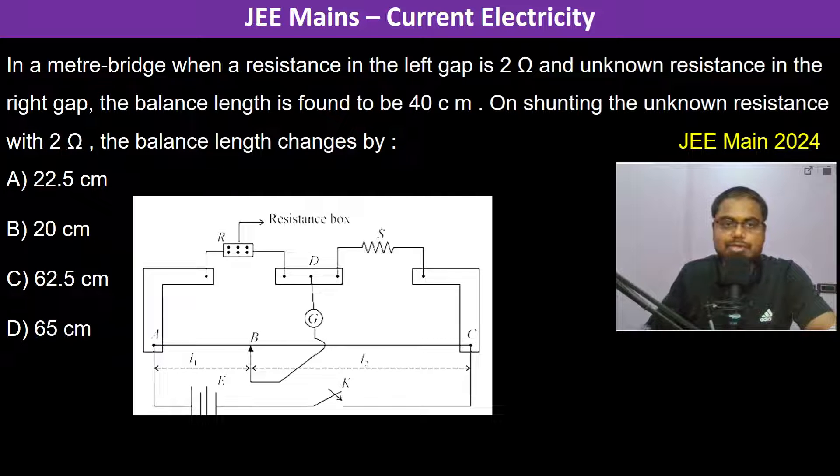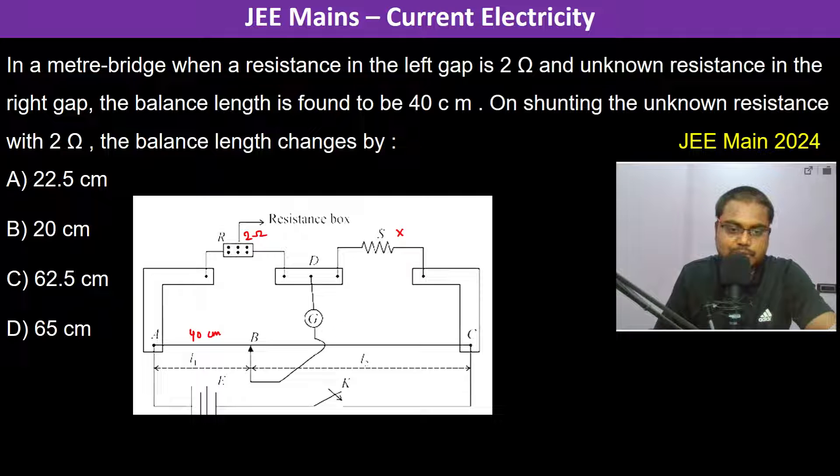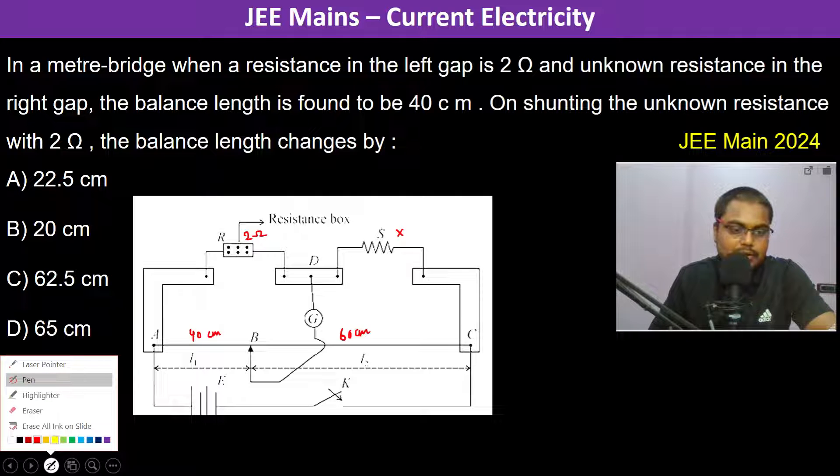In a meter bridge, when the resistance in the left gap is 2 ohm and unknown resistance in the right gap, this is x here, then the balance length is found to be 40 centimeter. On shunting the unknown resistance with 2 ohm, the balance length changes by - so this is 40 centimeter, so this should be 60 centimeters. Now we have to understand...